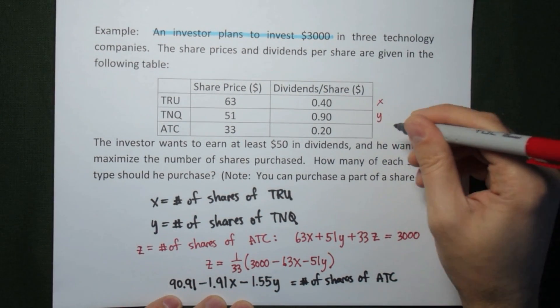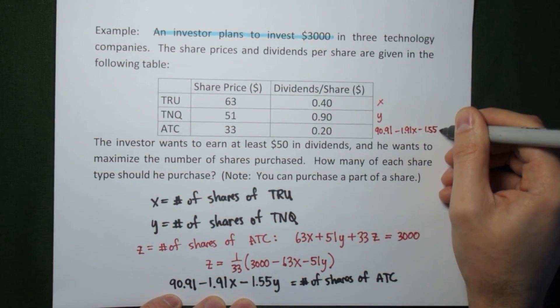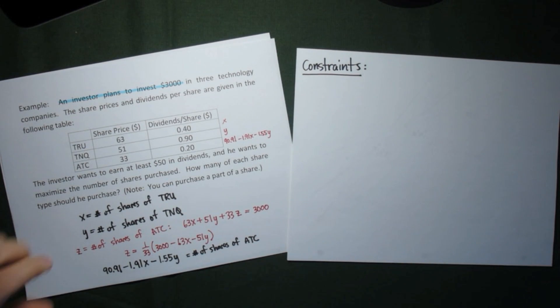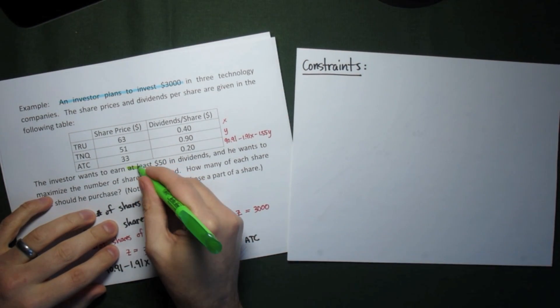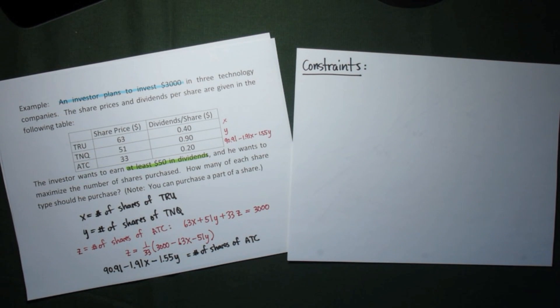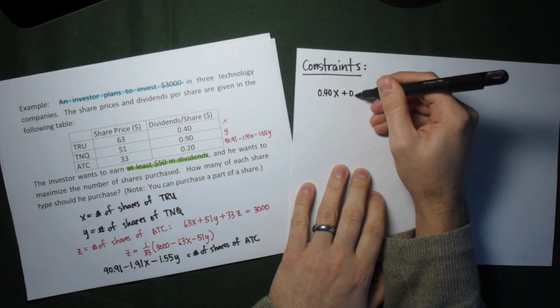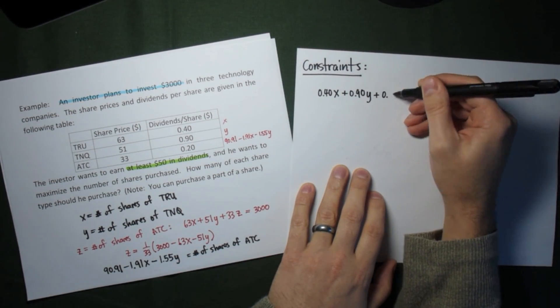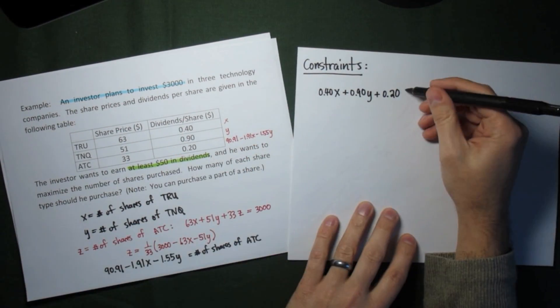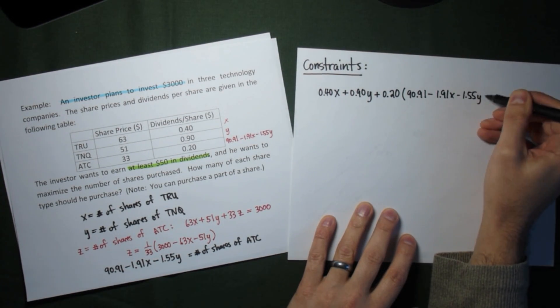To make the constraints, we already have a table, and so we'll label the table with the variables that we're using, and then we'll create our constraints that way. Looking at this problem, there really is only one constraint on our variables. We want to earn at least $50 in dividends. And so, we write down the constraint from our table. The number of dividends, or the amount of dividends, is given by this function here.